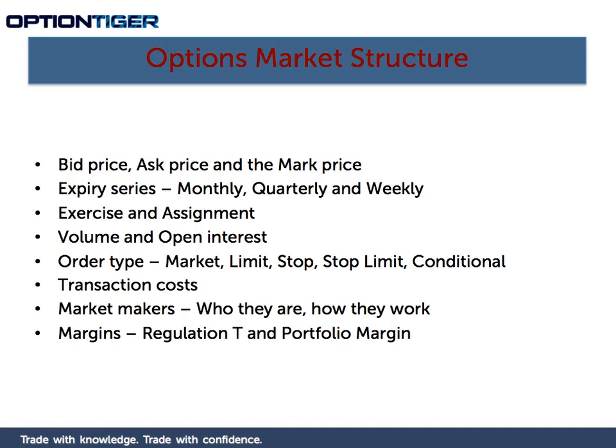Transaction costs are your brokerage costs. In the options market, pricing is generally based on the number of contracts you execute — maybe $1 or $1.25 per contract. You always want to keep transaction costs as low as possible. As a general guideline, if your broker is charging no more than $1 per contract, you're in pretty good shape as far as transaction costs are concerned.